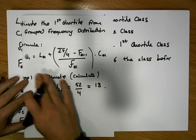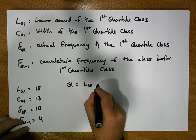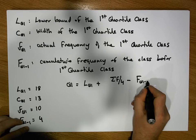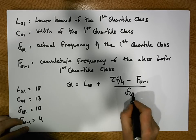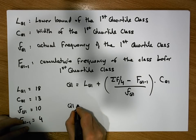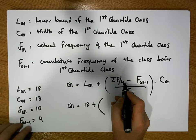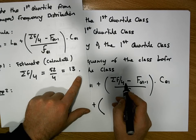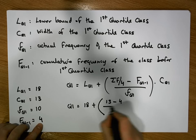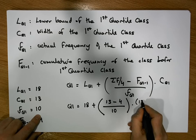Now that we have all the values, we can apply our formula. Q₁ is equal to L of Q₁ plus (σf/4 minus capital F of Q₁ minus 1) divided by small f of Q₁, times C of Q₁. Substituting: Q₁ equals 18 plus (13 minus 4) divided by 10, multiplied by 13.